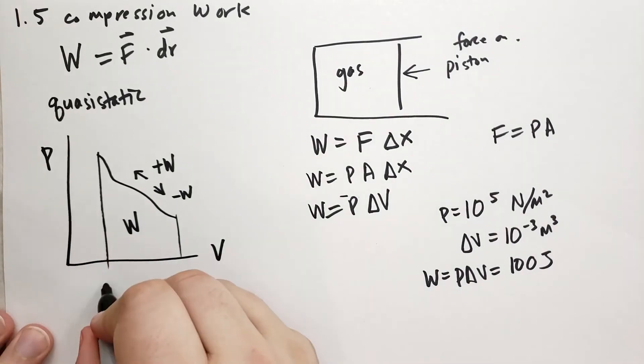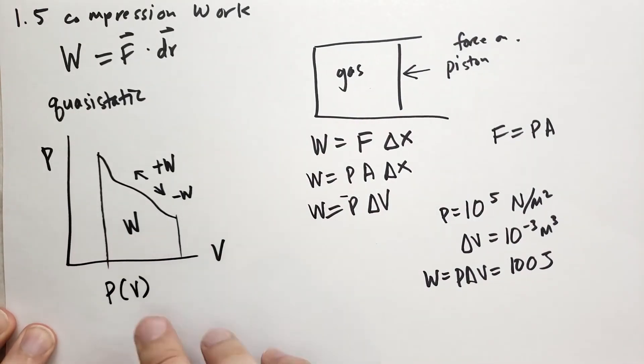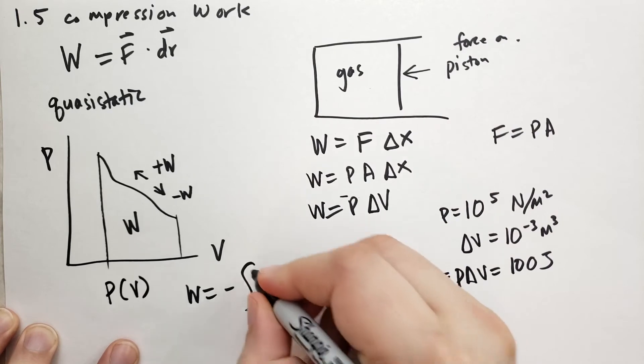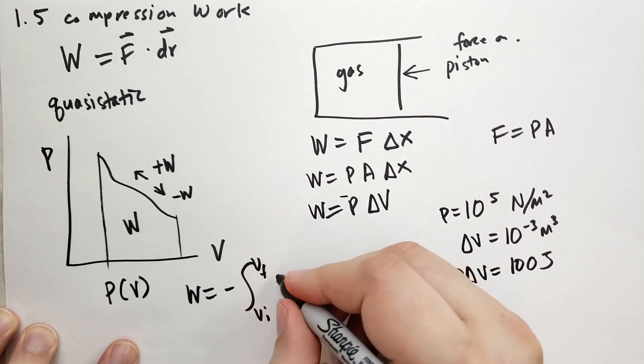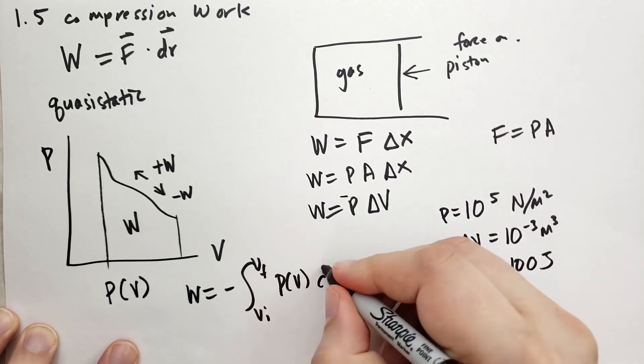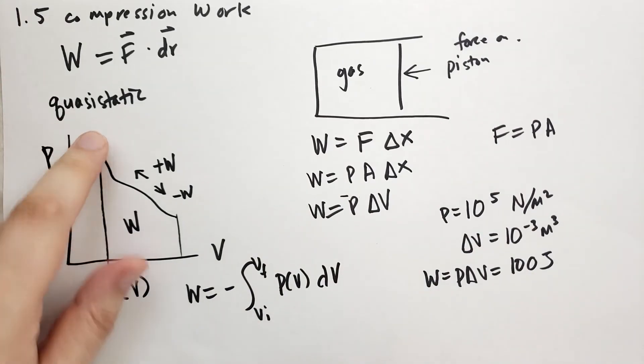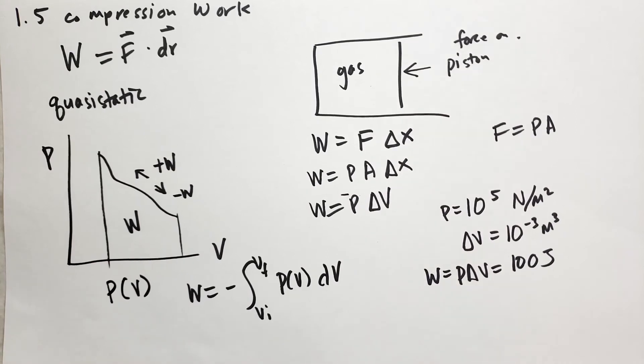If we can find a function for the pressure depending on the volume, then we can rewrite this as minus the integral from the initial volume to the final volume of the pressure over some small slice of dV. And this is for quasi-static. Again, we're not rapidly changing the volume so much so that it's comparable to the speed of sound in the volume.